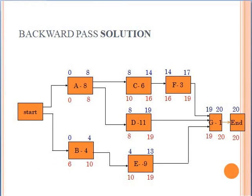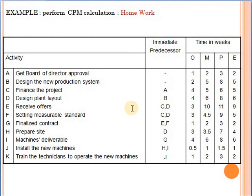This is how we do the calculations related to the CPM — the critical path method. When I say perform the CPM calculations, this means you will have to draw the network, put the duration for each activity, do the forward pass calculations, the backward pass calculations, and determine the critical path and its duration. All of this is considered as doing the CPM calculations. Thank you for listening.